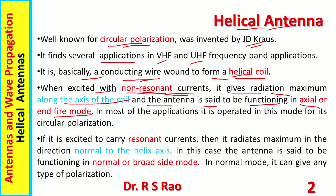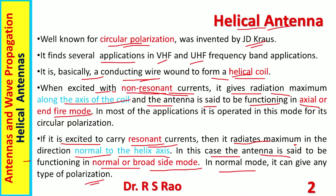There are basically two modes: axial mode and normal mode. In axial mode it gives circular polarization, and most applications use this axial or end-fire mode. If excited to carry resonant currents, it radiates maximum in the direction normal to the helix axis — broadside operation — and the antenna is said to function in normal or broadside mode. In normal mode it can give any type of polarization. When excitation is with non-resonant currents it goes into end-fire mode with circular polarization; when excited with resonant currents it goes into broadside mode where polarization can be anything including circular.